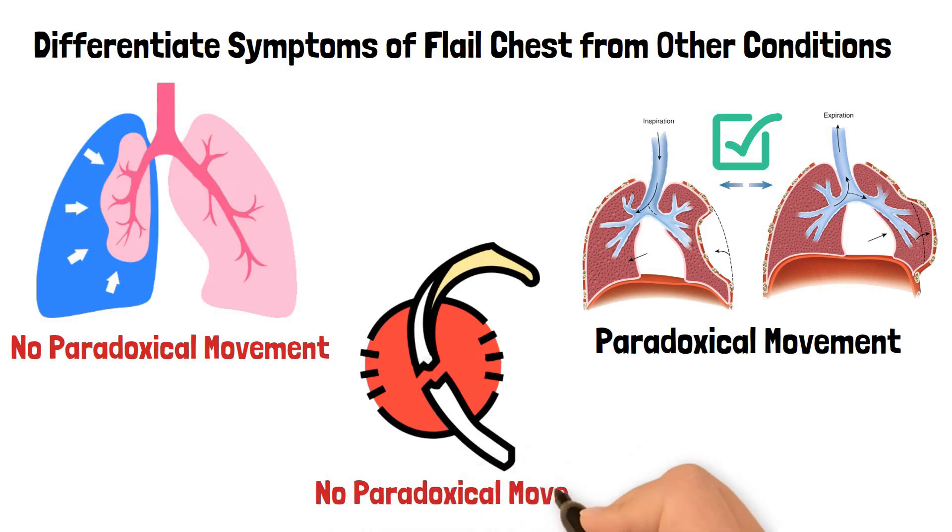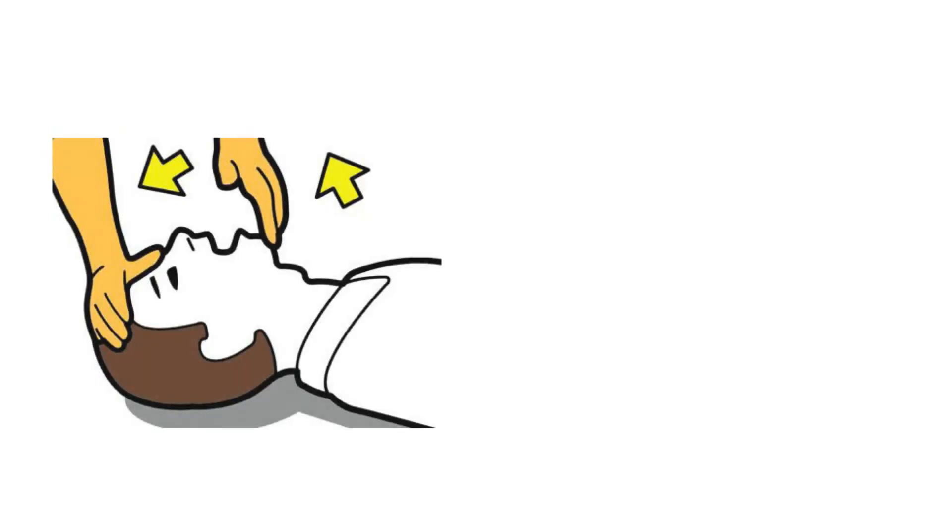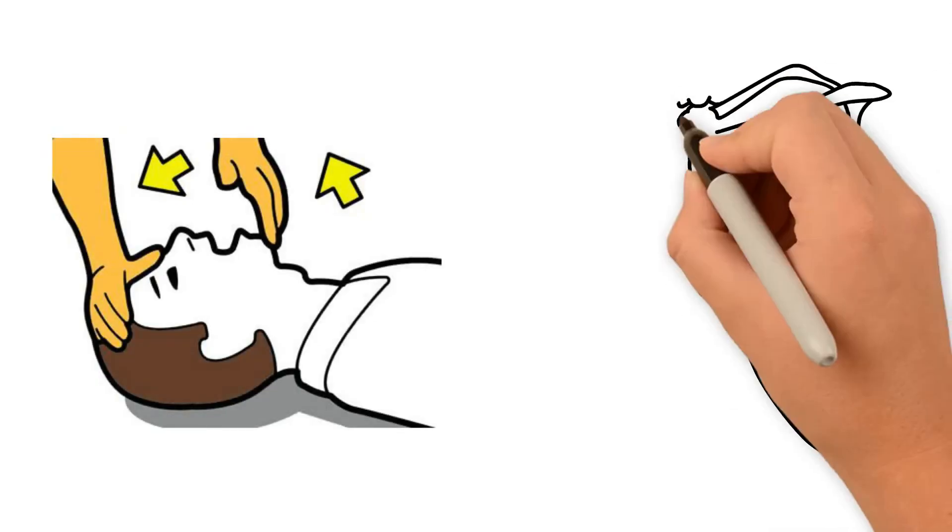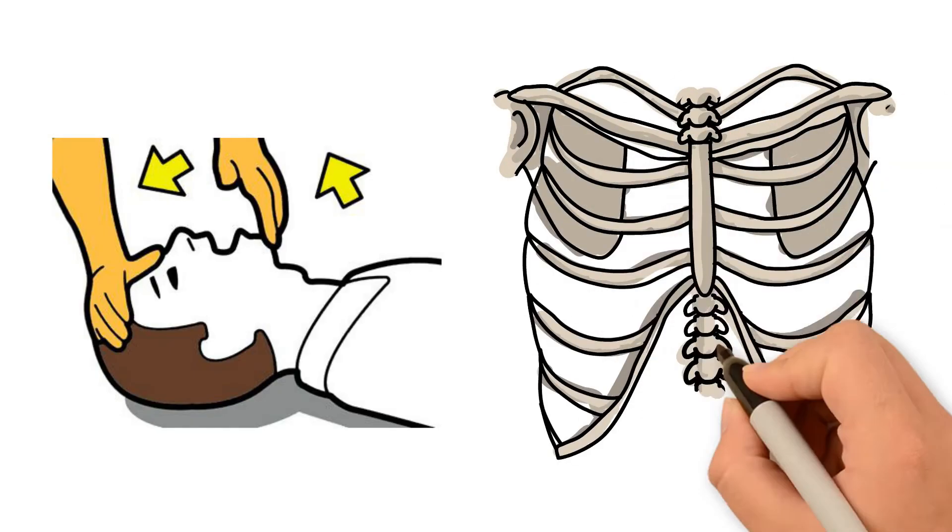A flail chest can quickly lead to respiratory failure due to poor ventilation. For this reason, immediate stabilization of the flail segment is critical.